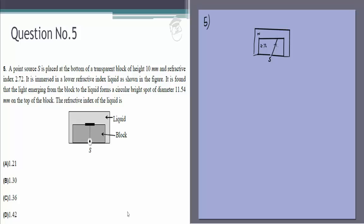Rays will go like this and we can assume that the liquid is rarer than the block. That's a reasonable assumption. In that case there will be an angle of incidence beyond which there will be total internal reflection. So we just find out this angle.